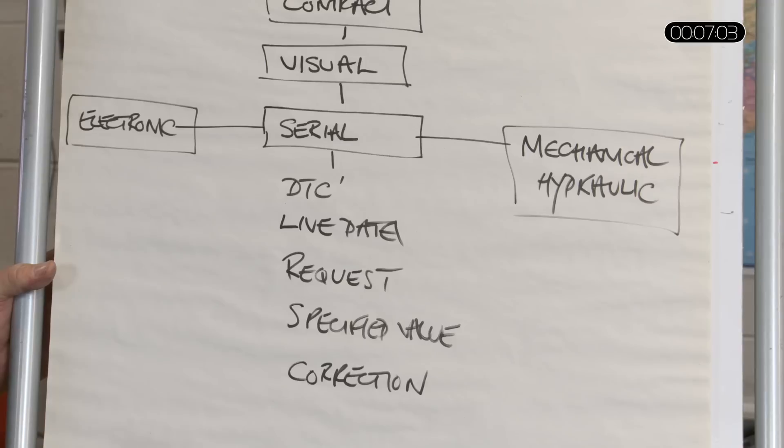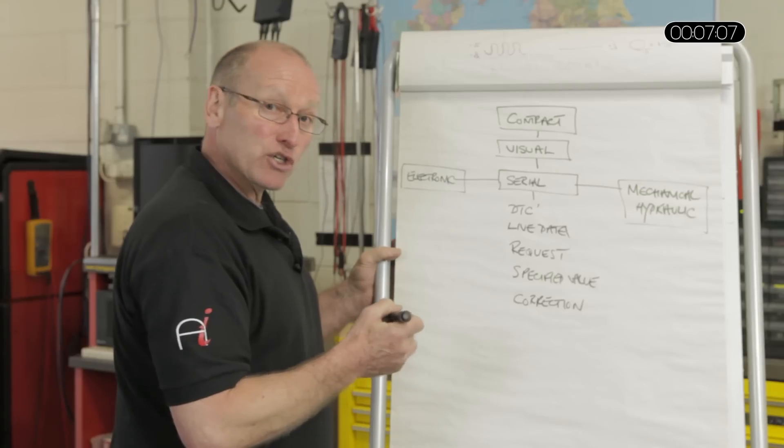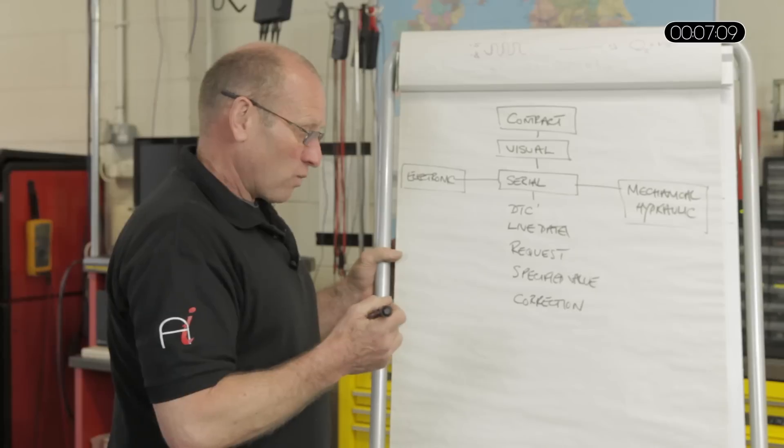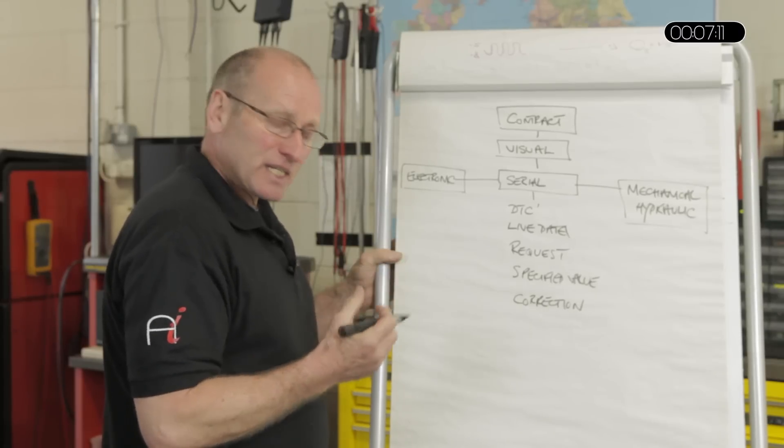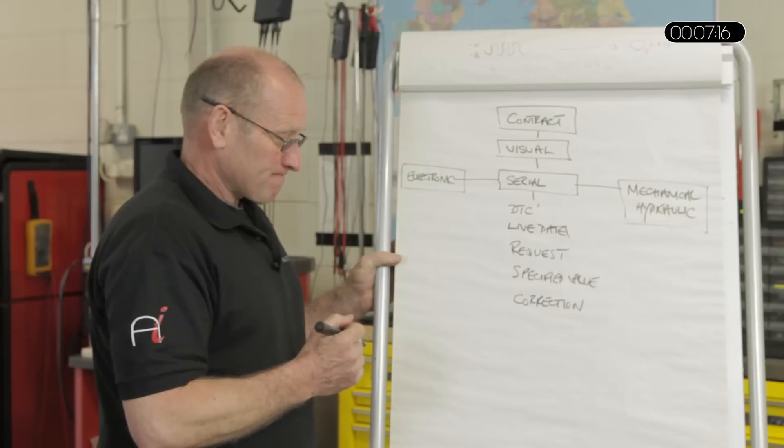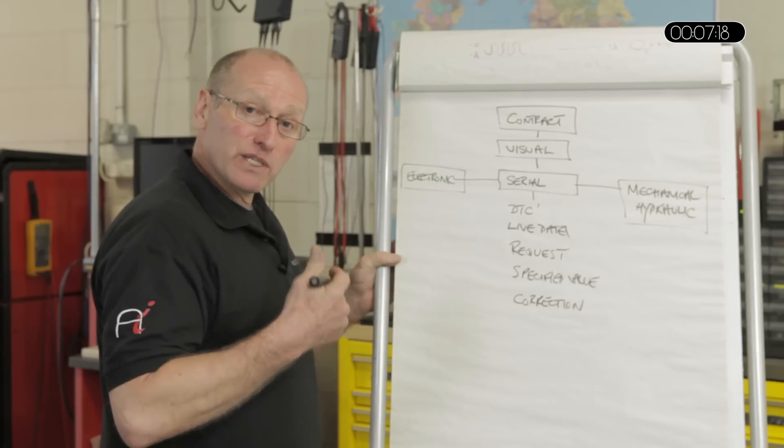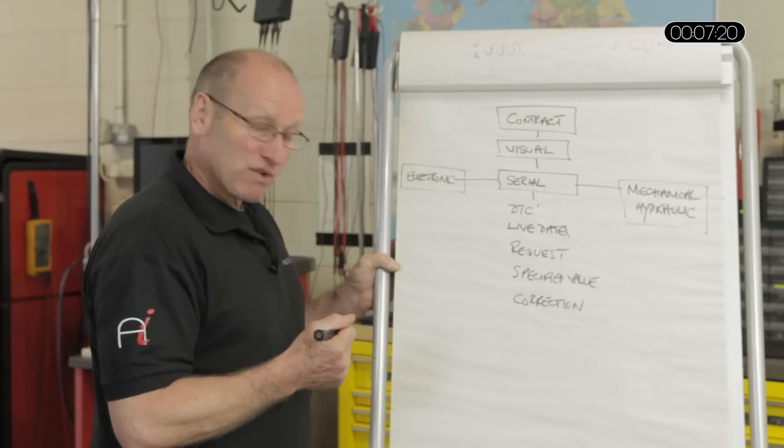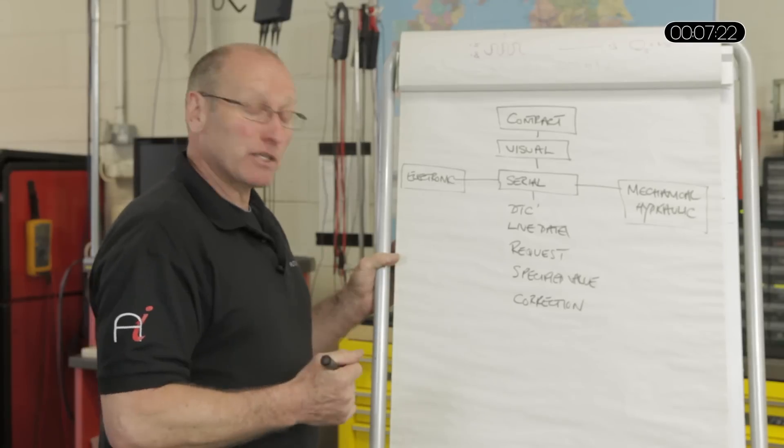The really smart way to look at serial data is not necessarily to look at specified values, but to look at corrective values. Because where a default exists or a defect exists, there may not be a DTC. But you may see correction values starting to increase progressively, suggesting there's something not right.